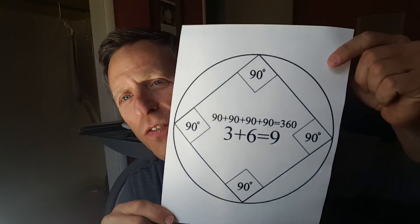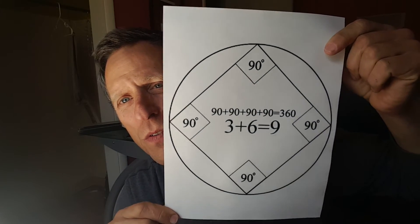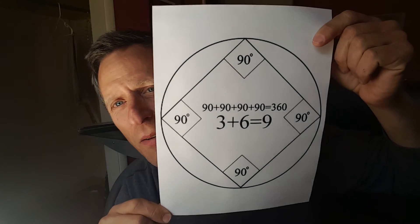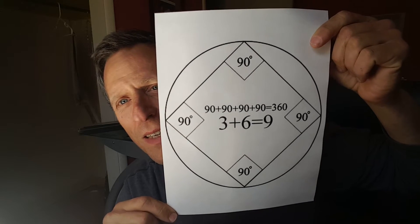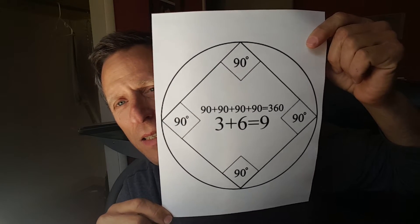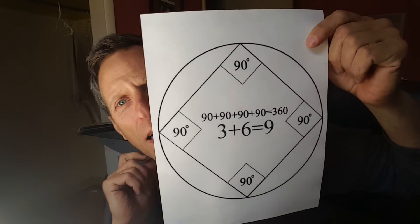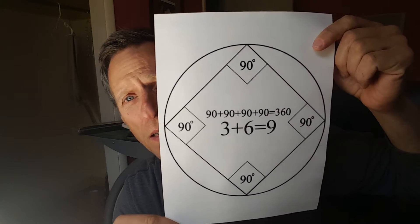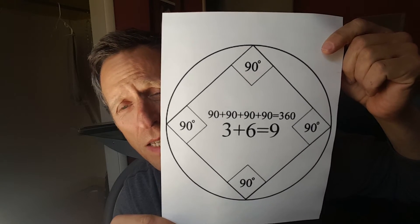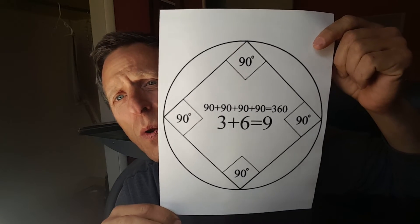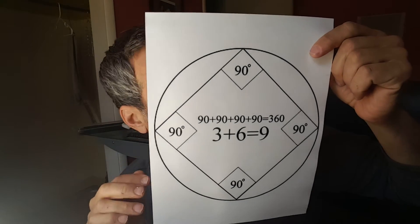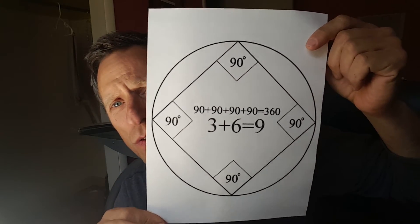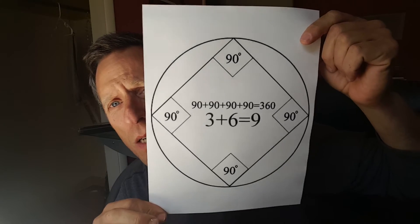People believe the universe is in the shape of a circle, and if we look at the circle, every degree's digital root is 9. A right angle is 90 — 0 plus 9 is 9. A 45-degree angle — 4 plus 5 is 9. The full circle, 360 degrees, is 9. No matter how much you cut the angle, you're always going to have a digital root of 9.